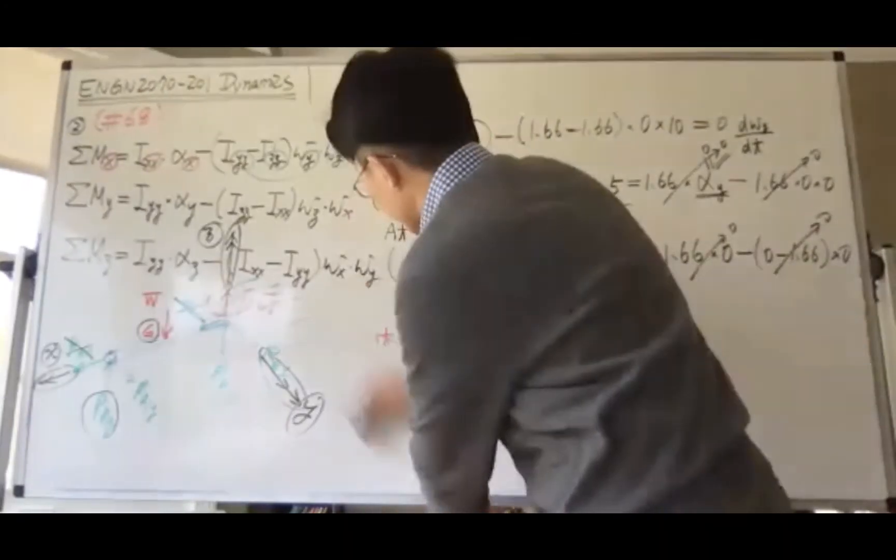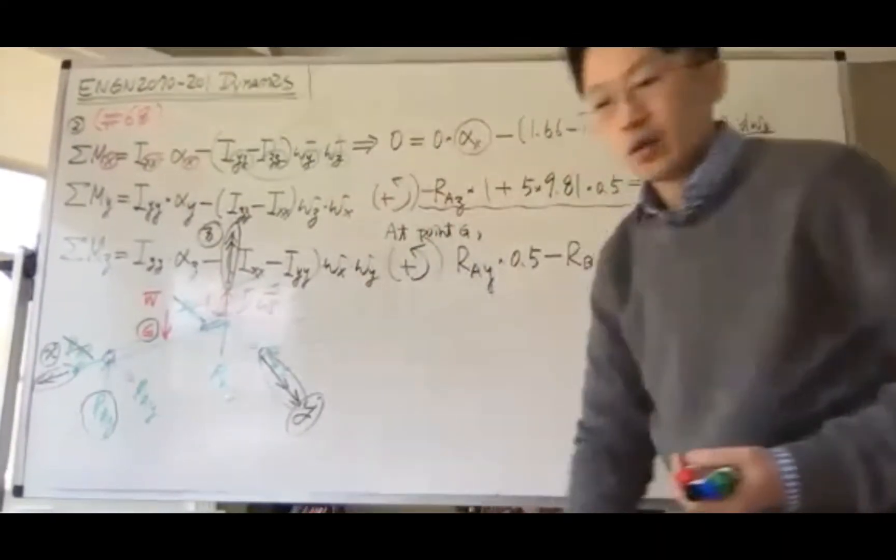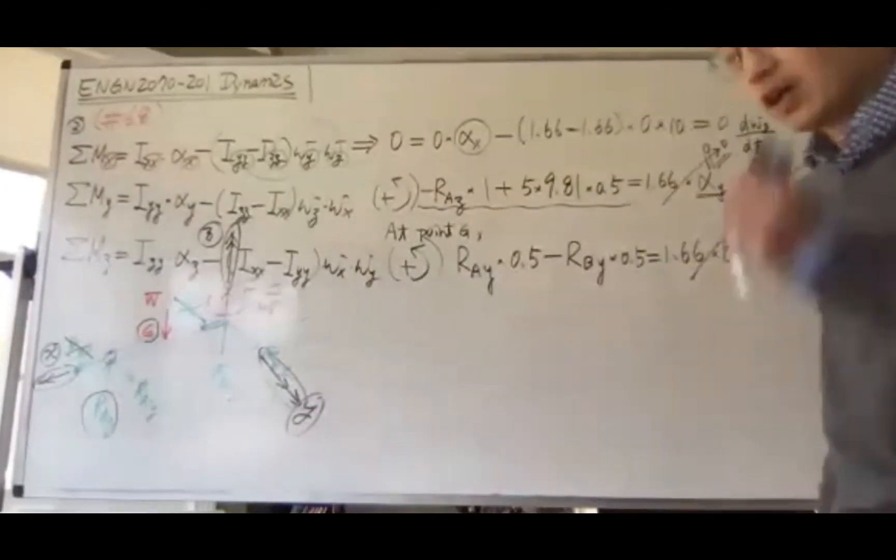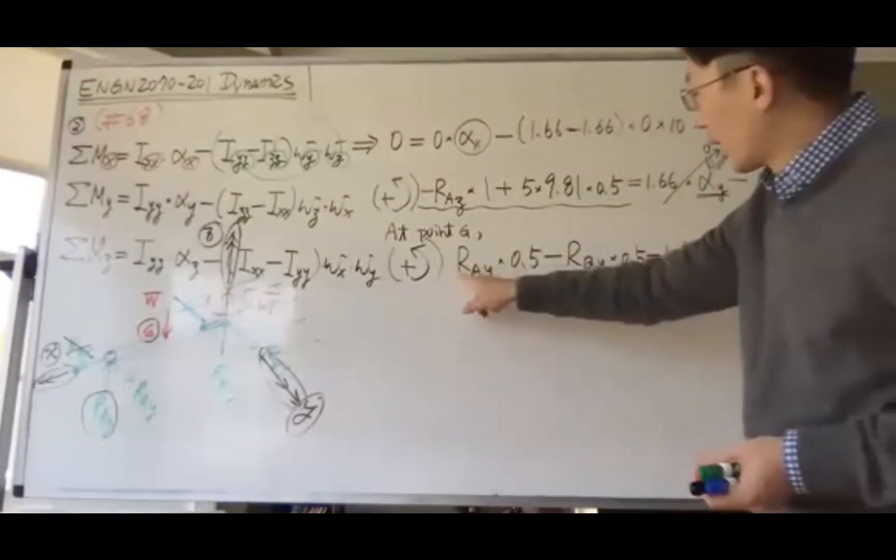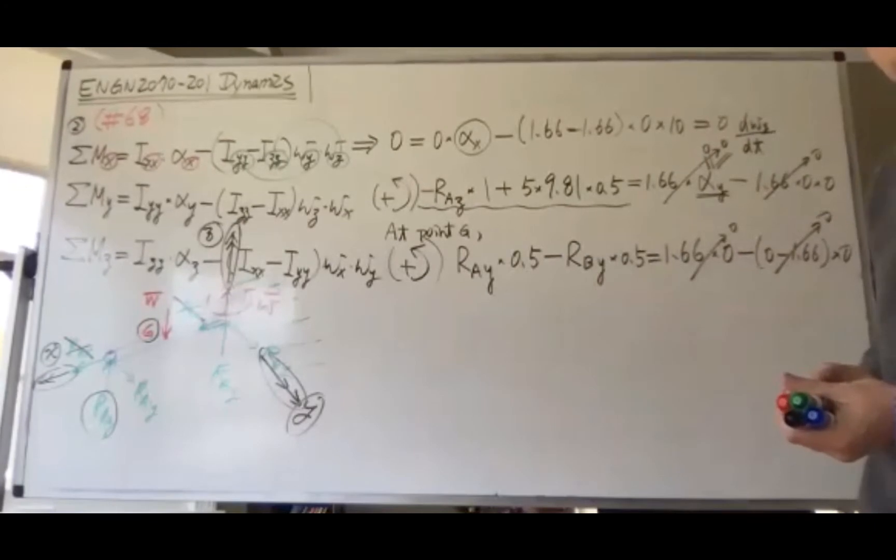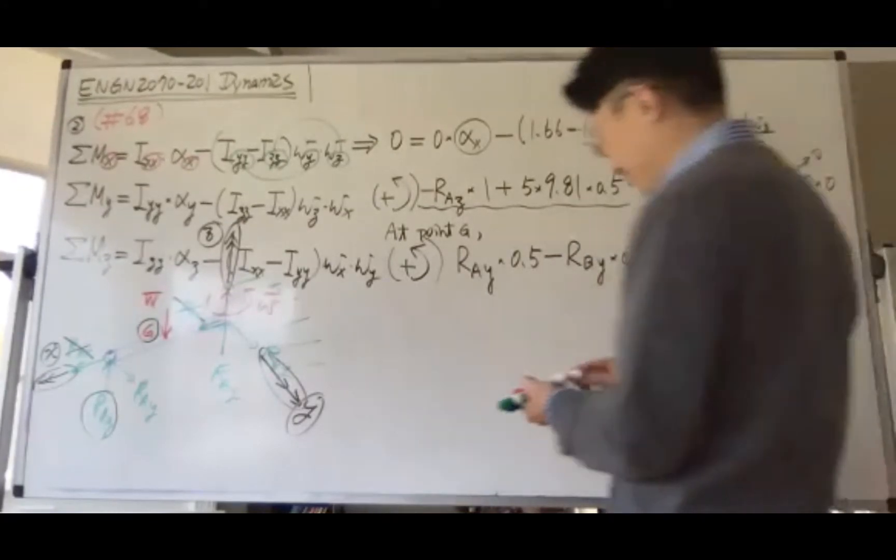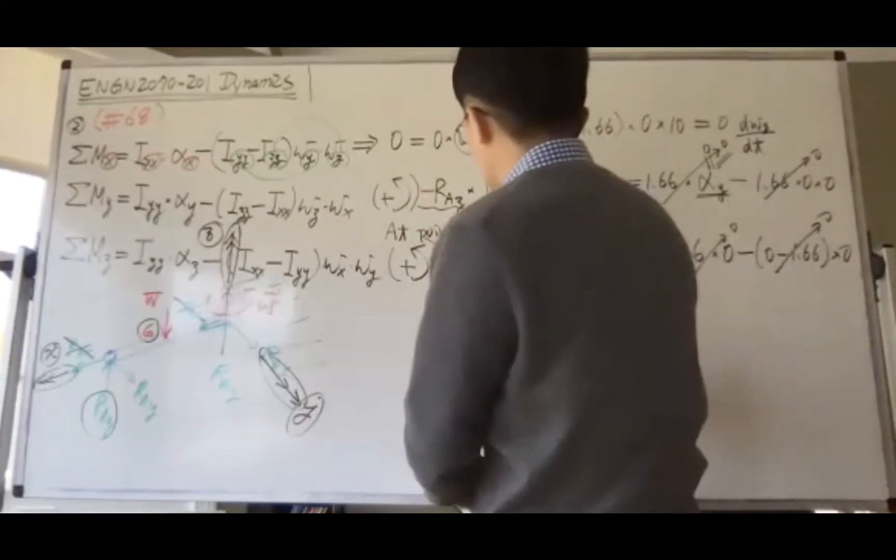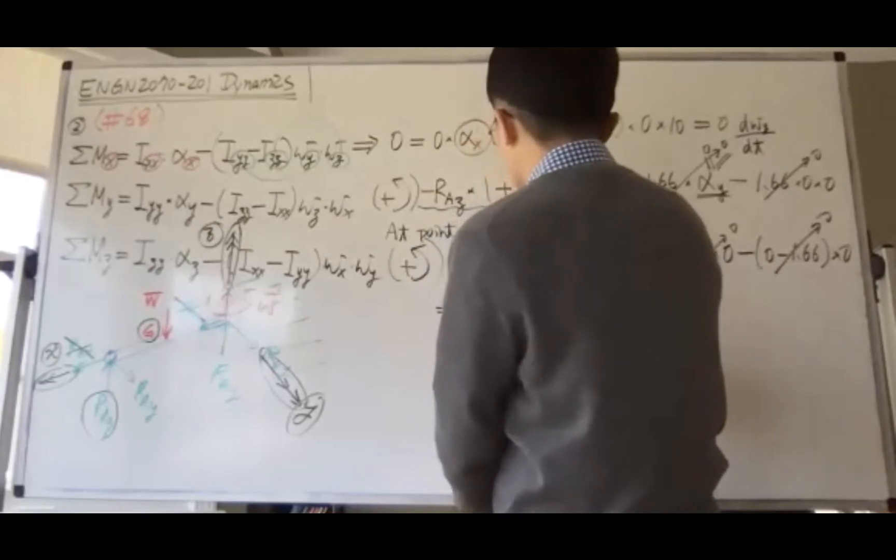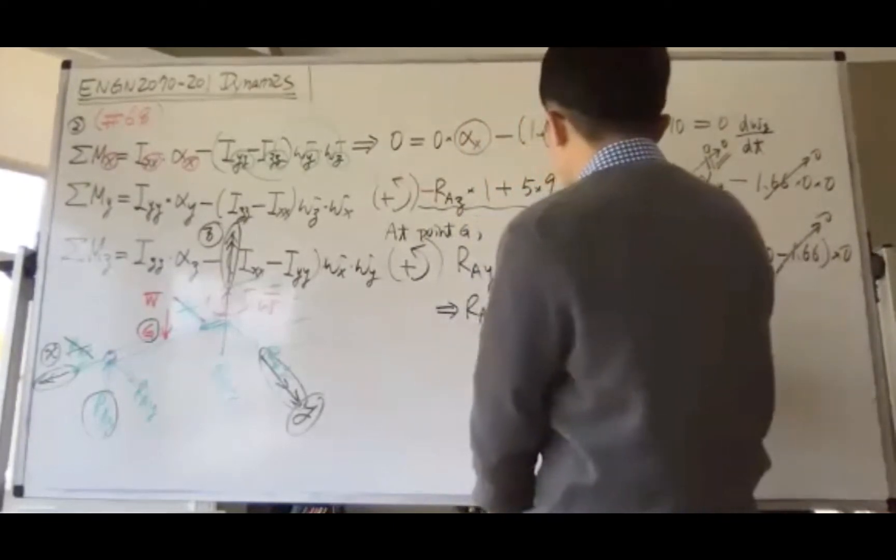From this equation, you know that R_ay and R_by should be the same. So R_ay equals R_by.